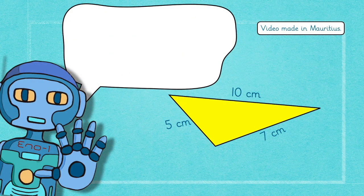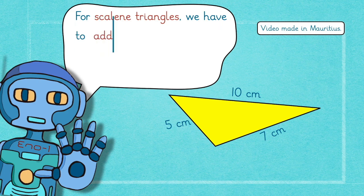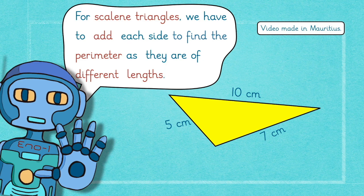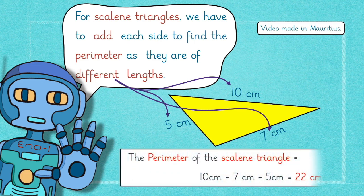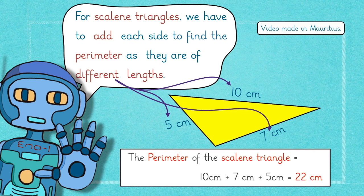Yes, you are right, Inouane. For scalene triangles, we have to add each side to find the perimeter as they are of different lengths. The perimeter of this scalene triangle here is equal to 10 cm plus 7 cm plus 5 cm which is equal to 22 cm.